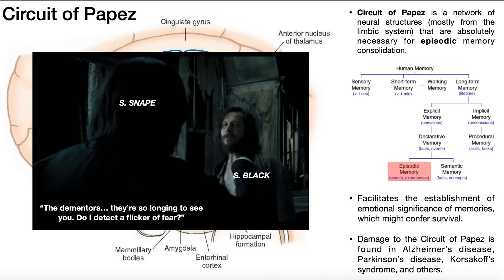In neurological conditions like Alzheimer's disease, Parkinson's disease, and Korsakoff syndrome — which is a result of chronic alcohol abuse — these can cause damage to certain pieces of the Circuit of Papez. If you damage any one of those pieces, it can impair not only episodic memory consolidation into long-term memory, but also the establishment of emotional significance for those memories. So if Sirius Black had Alzheimer's disease and damage to the Circuit of Papez, when Snape says that line, he might as well have said, 'Yeah buddy, let's go see them together.'